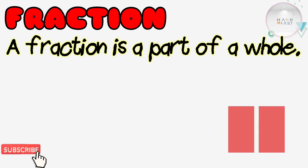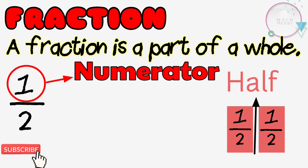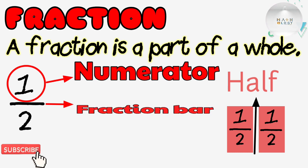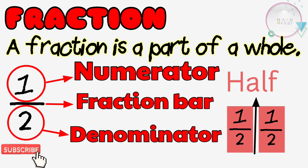It represents one or more equal parts of a whole object. Look at the fraction 1/2, which is half. The number above the line is the numerator—it indicates the number of equal parts considered. The line is called the fraction bar. The number below the fraction bar is called the denominator—it indicates the total number of equal parts the whole is divided into.